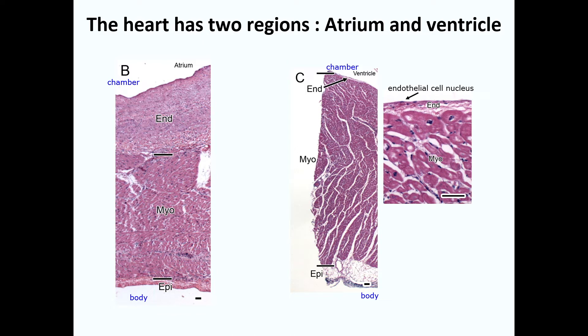Each region of the heart is divided into three layers. The names of the layers are the same, but there are differences between atria and ventricles, particularly in terms of layer thickness and specialized cell types. You should be prepared to know how to distinguish between these two regions and among the three layers.